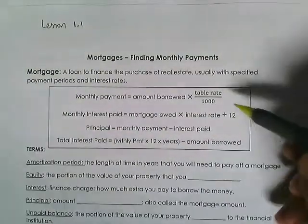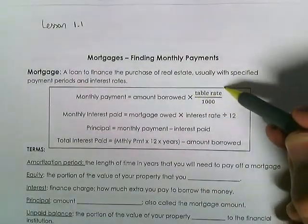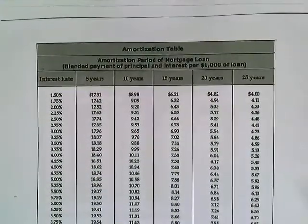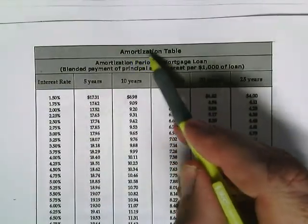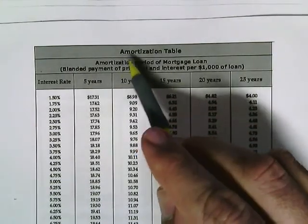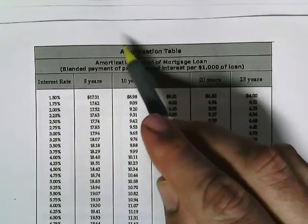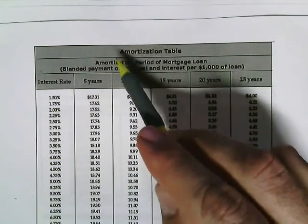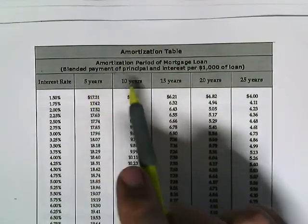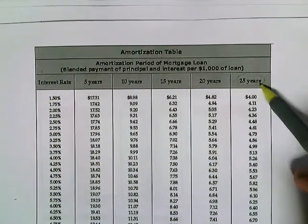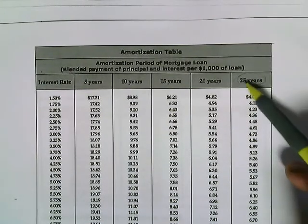The monthly payment is the amount borrowed times the table rate, divided by 1000. The table rate comes from the amortization table. Amortization is basically how long you're taking to pay off your mortgage. The most common amortization period or repayment length is 25 years.